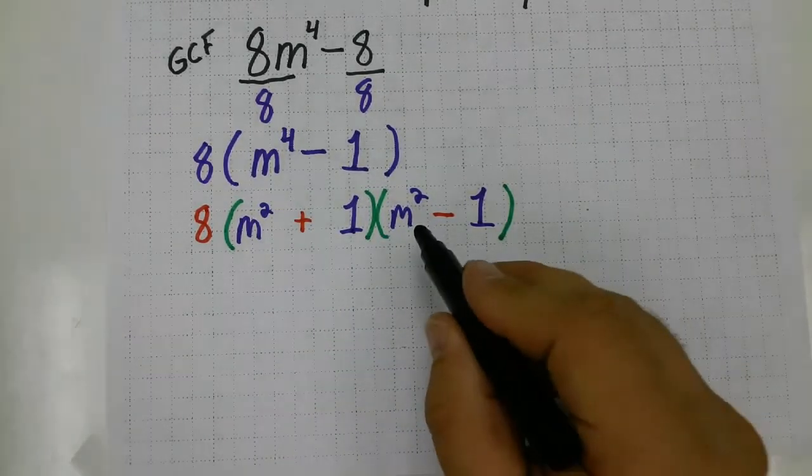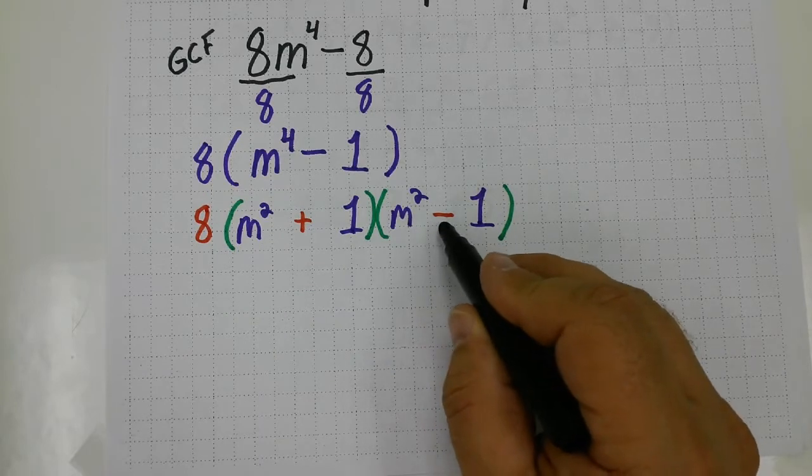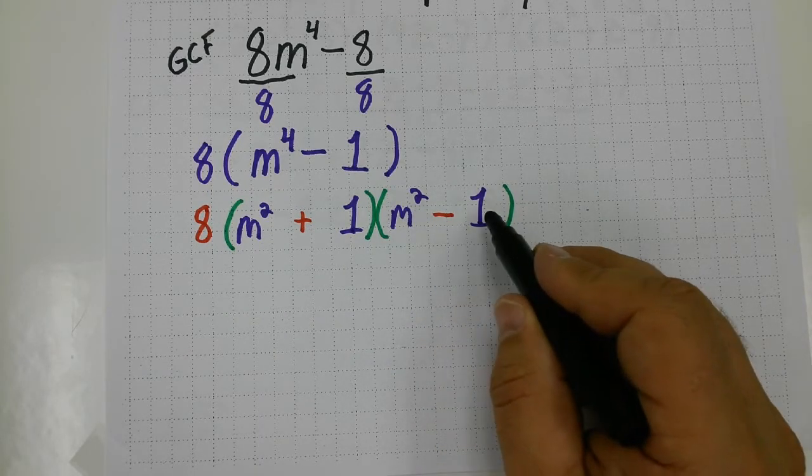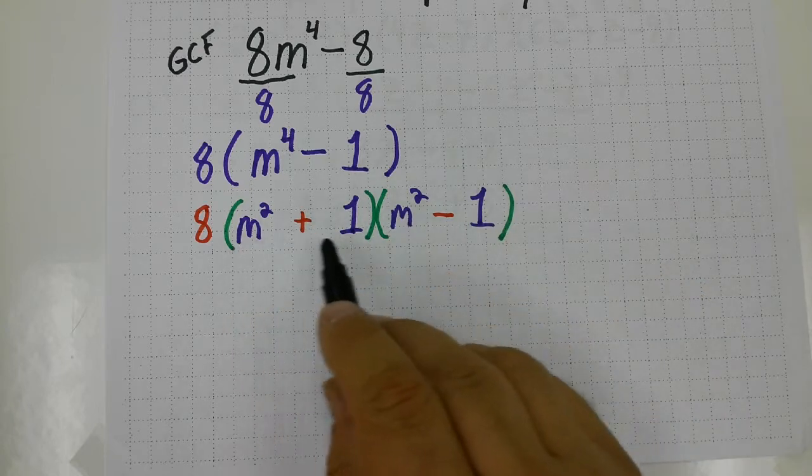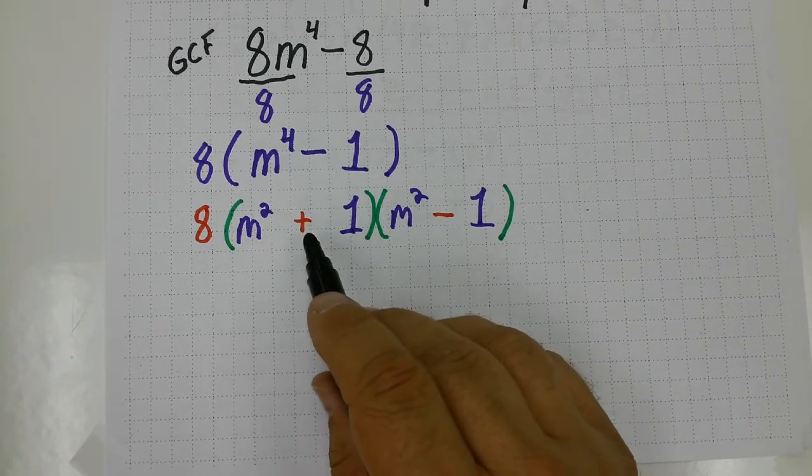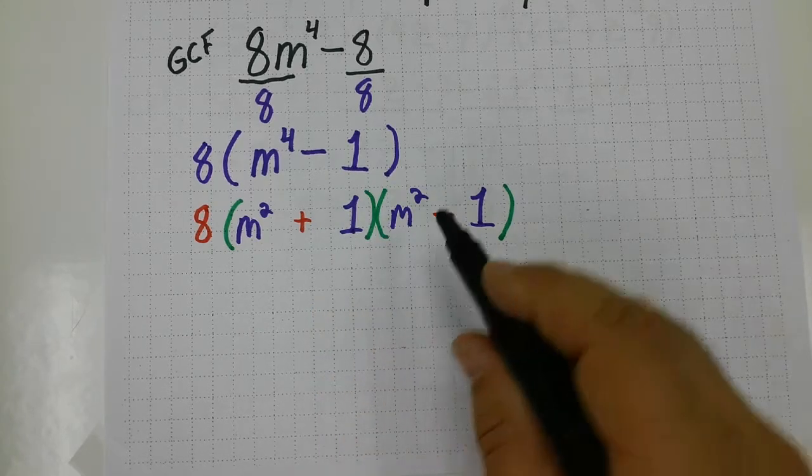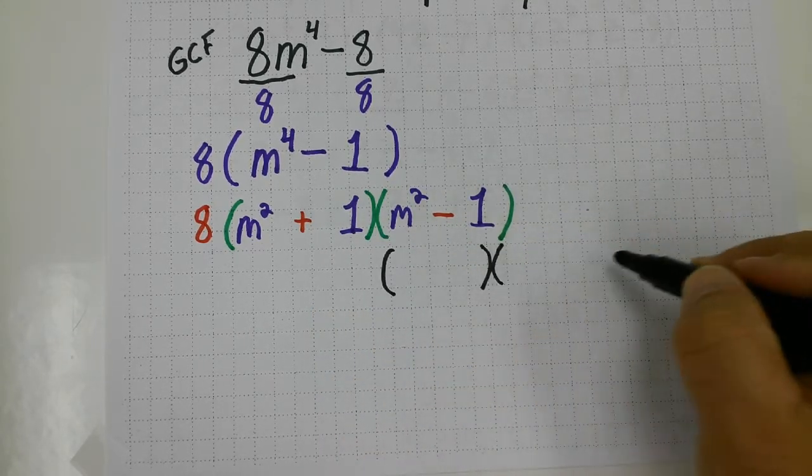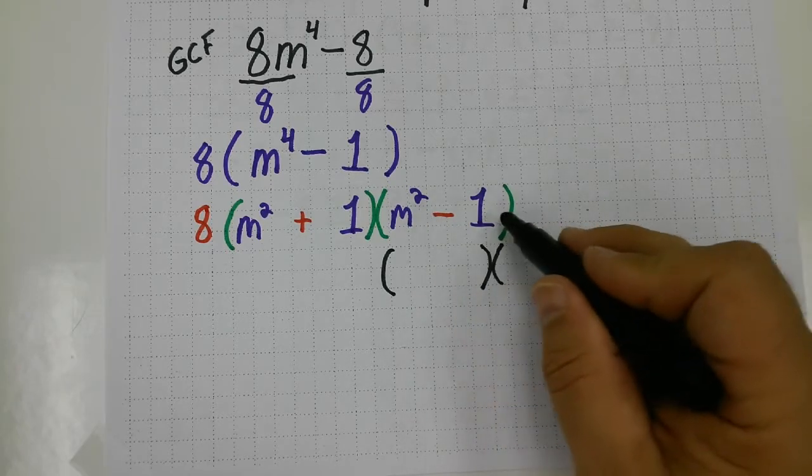And I notice that I again have a difference of two perfect squares—there's the minus, there's a perfect square, there's a perfect square. This here's prime, you can't factor a sum of two perfect squares. You just can't do it. Over here, we can beat this up a little bit further, though. So I'm going to factor m squared minus one.